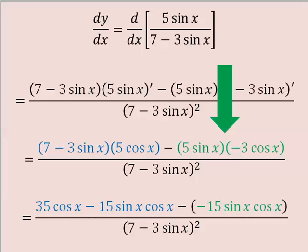When I multiply 5 sine x and negative 3 cosine x, I get negative 15 sine x cosine x.